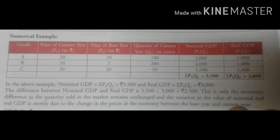Let us take a numerical example to understand the meaning of real GDP and nominal GDP. Goods A, B, and C are given. The current year price is P1, the base year price is P0, and the current year quantity is Q1. We need to calculate nominal GDP and real GDP.